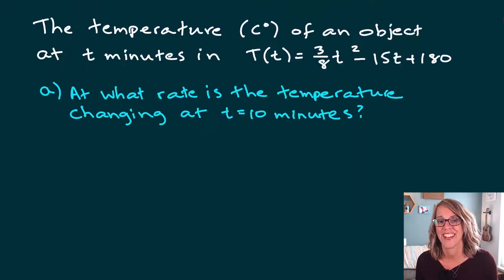Let's look at another example. In this example, we are looking at a changing temperature of an object after so many minutes. It is given to us in this function, three eighths t squared minus 15 t plus 180. This is actually something that's used a lot in forensic science, but we've got just a nice simple example here. For this one, our first question is at what rate is the temperature changing at t equals 10 minutes?